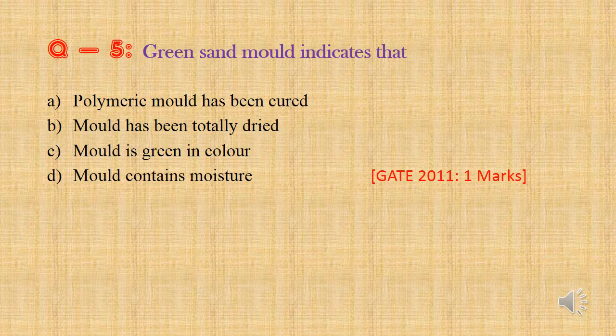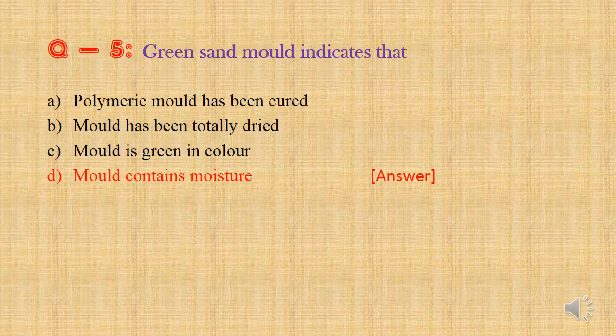Question 5: Green sand mold indicates that — Option a: Polymeric mold has been cured, Option b: Mold has been totally dried, Option c: Mold is green in color, Option d: Mold contains moisture. This is a very simple question. Green sand is the sand which contains moisture. So the answer is Option d: Mold contains moisture.